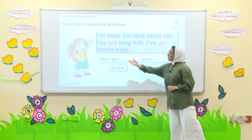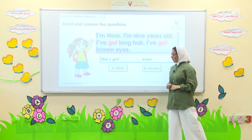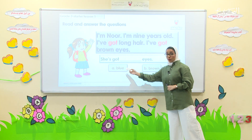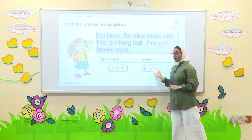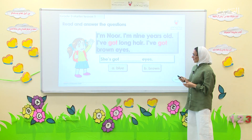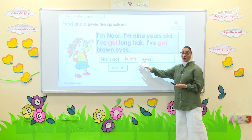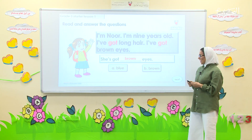Next. She's got blank eyes. What about her eyes? A: blue, or B: brown. What do you think? Write. Show me your mini boards. Let's check together. Great job! She's got brown eyes. Excellent!